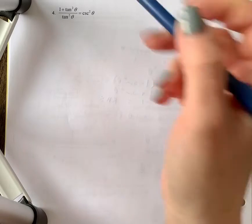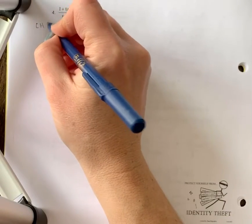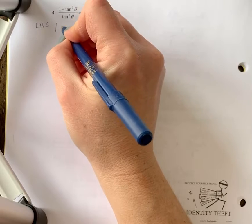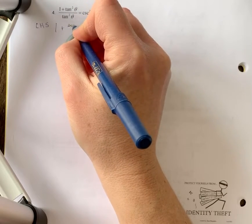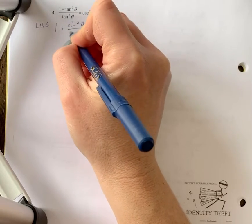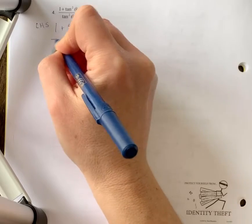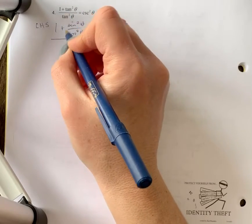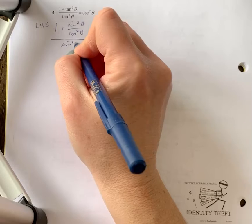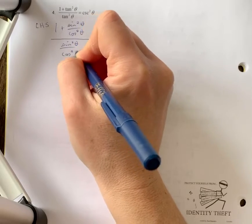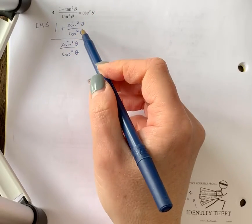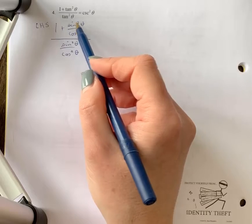So left-hand side here: one plus instead of tan squared theta, I'm going to write it as sine squared theta over cos squared theta, divided by tan squared theta, which is sine squared theta over cos squared theta.